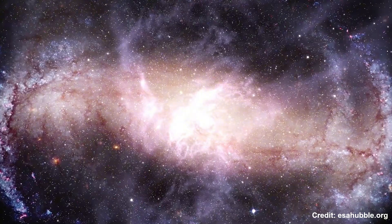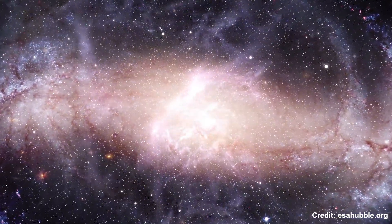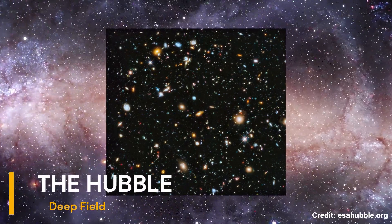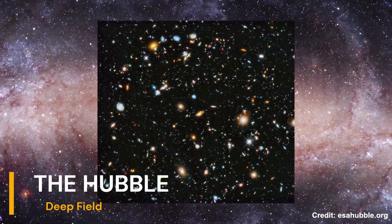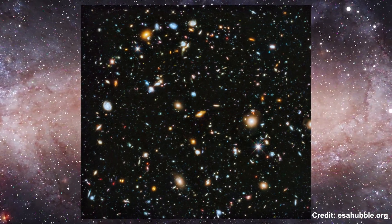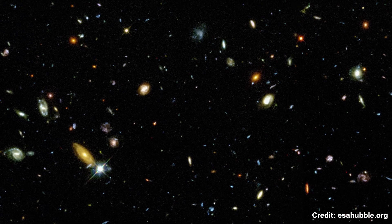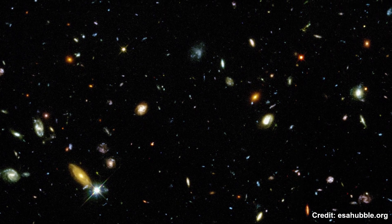In 1995, the Hubble Space Telescope captured one of the most important images in the history of astronomy, the Hubble Deep Field. The telescope was pointed at a seemingly empty patch of sky, an area the size of a grain of sand held at arm's length. What it revealed was astonishing: thousands of galaxies, each filled with billions of stars.